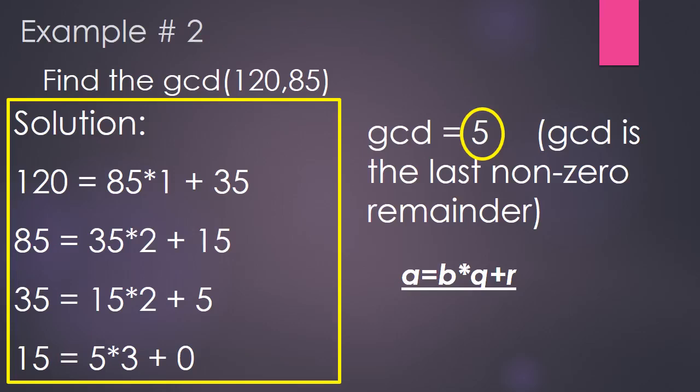The next step gives new A as 35 and new B as 15. So, 35 divided by 15 gives quotient 2 with remainder 5. The last step gives new A as 15 and new B as 5. So, 15 divided by 5 gives quotient 3 with remainder 0. Once the remainder becomes 0, we stop and look for the last non-zero remainder. Hence, the GCD of 120 and 85 is 5.